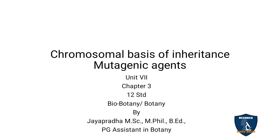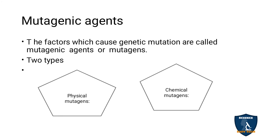Today we are going to discuss mutagenic agents in the chromosomal basis of inheritance. The agents which induce mutation in an organism are called mutagenic agents. For example, you are watching TV when your mother calls you — that is an agent which disturbs your interest. Similarly, mutation is caused by certain agents, and they are called mutagenic agents.